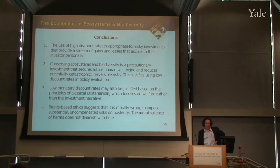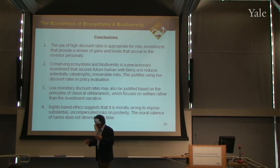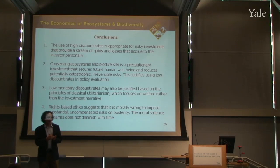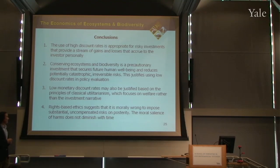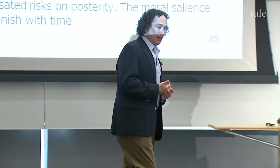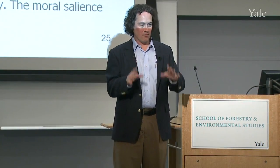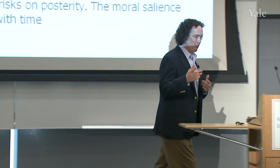The use of high discount rates is appropriate for risky investments that provide gains and losses accruing to the investor personally. Market rates of return represent personal values or personal preferences about risk and about the timing of getting payouts. But conserving ecosystems and biodiversity is a precautionary investment — it secures future human flourishing. It's a way of reducing potentially catastrophic irreversible risks that we don't understand at all well. When we're undertaking actions or investments that reduce rather than enhance risk, we use low discount rates — in fact, possibly a discount rate even lower than the risk-free rate, which is already starting out at around 1%.